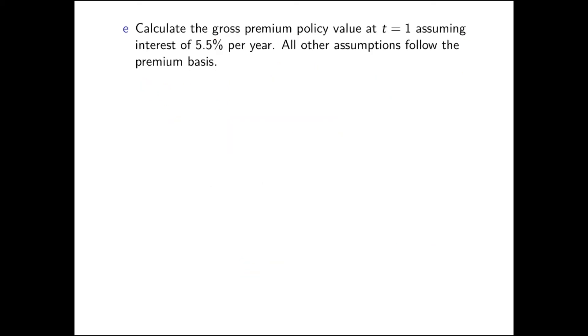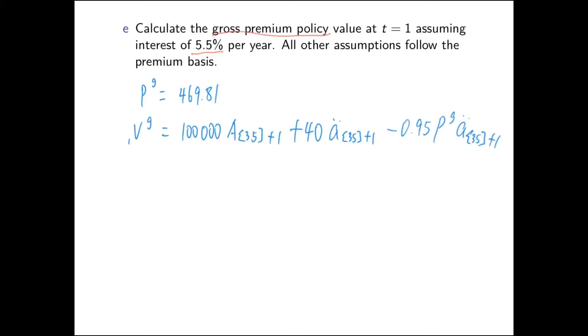In this exercise, we need to calculate the gross premium policy value at time one, but assuming a different interest rate. Everything else remains the same, meaning our premium is the same as the gross premium from part A. When we calculate the policy value at time one, the formula is the same as part C. The major difference is that the expected present values for the whole life insurance and annuity will be different based on the different interest rate. Those expected present values need to be calculated using programming, and the logic is what's most important.